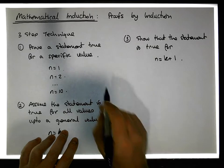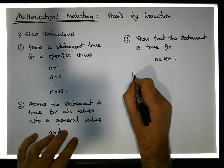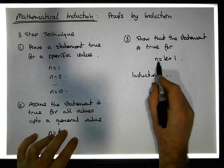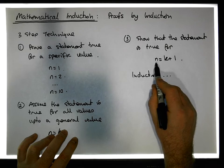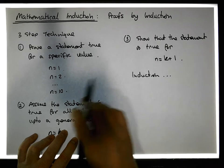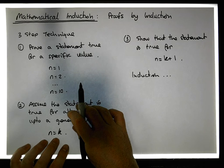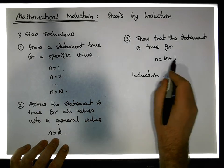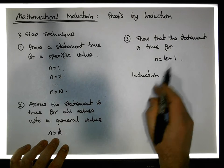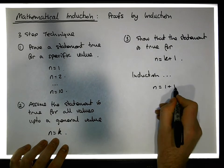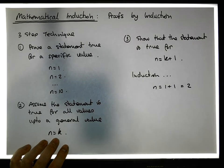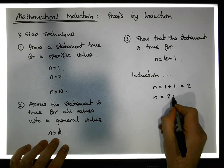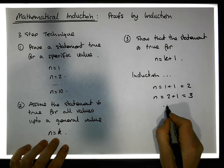What we effectively get then is this: we know the statement is true for n equals k plus one, based off the assumption. But we've also proven it true for n equals one. So because it's true for n equals one, it must be true for n equals two. And since it's true for n equals two, it must be true for n equals three, and so on. This is how the induction process works.